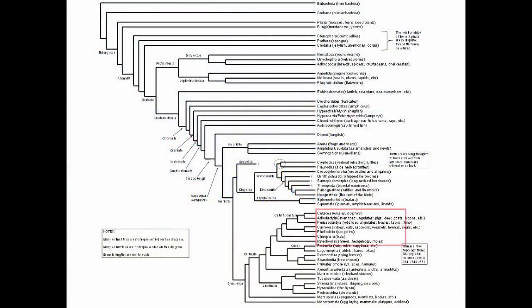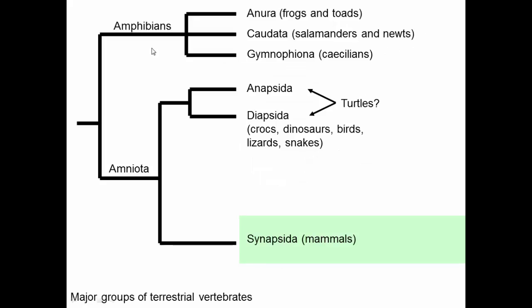Continuing our tour of the phylogeny, we've moved on to mammals. First, think about where we are: we have amphibians and amniotes. Within amniotes we had the reptiles and birds, descended from diapsids and perhaps anapsids in the case of turtles.